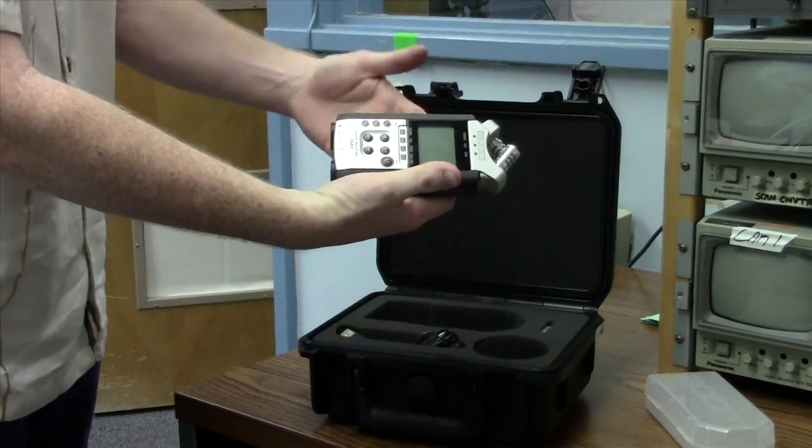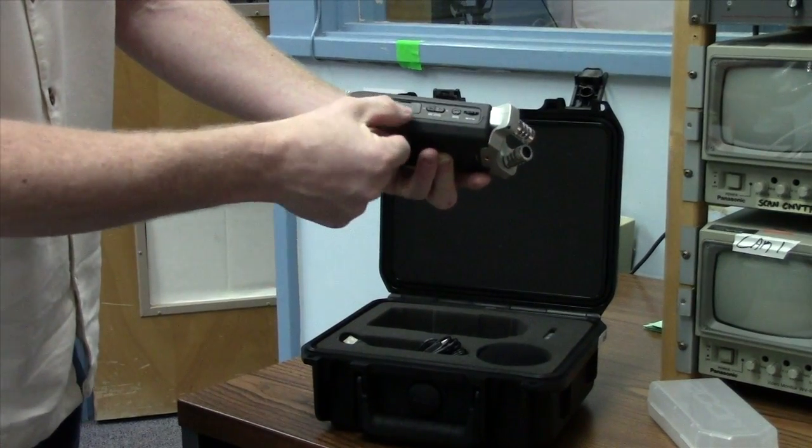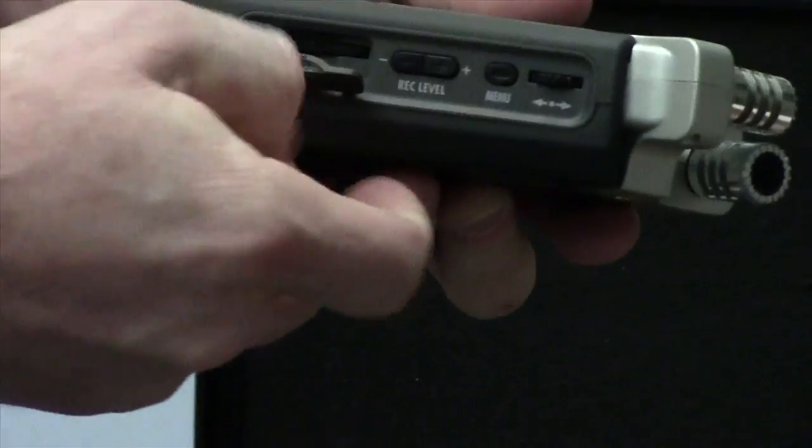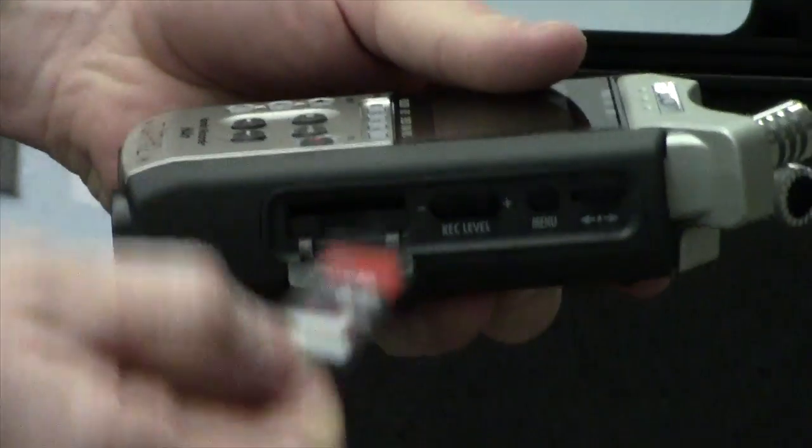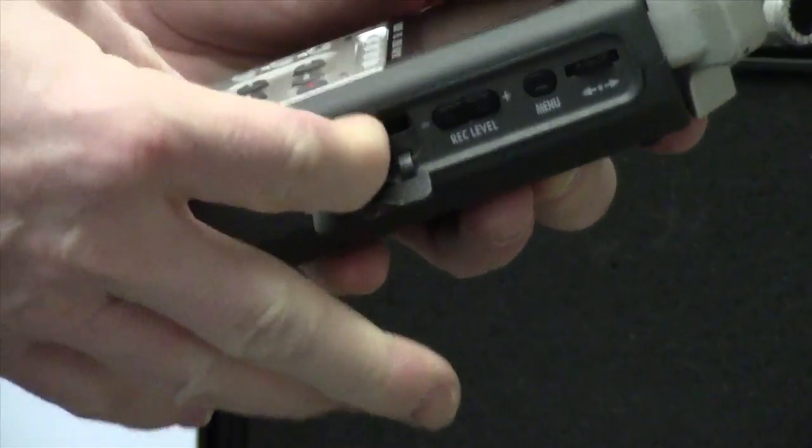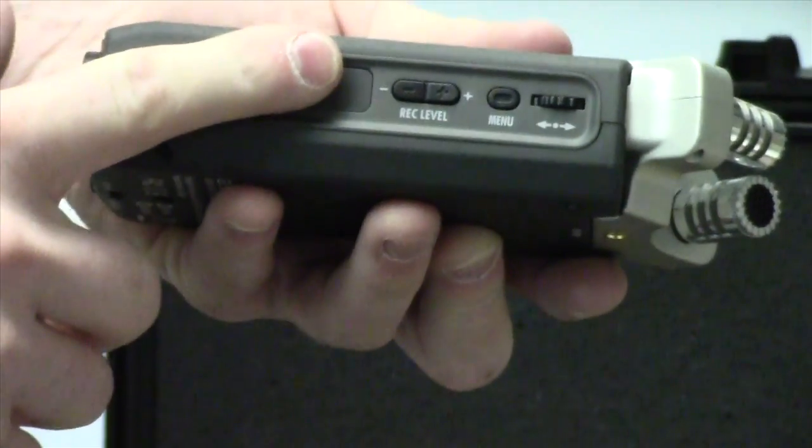Now the H4N audio recorder does have some different buttons on it that we'll be using. The first is this door right here which hides the SD card. The SD card is inside it normally. We normally leave it in there unless it's in a computer transferring files.